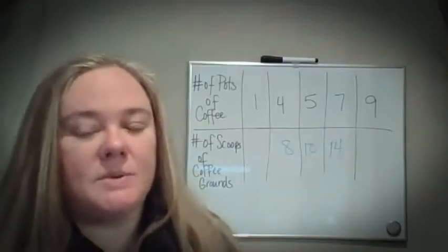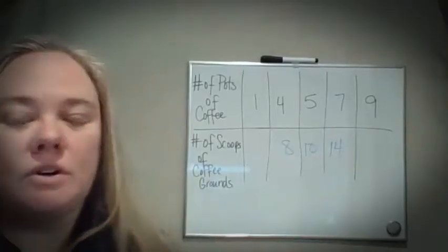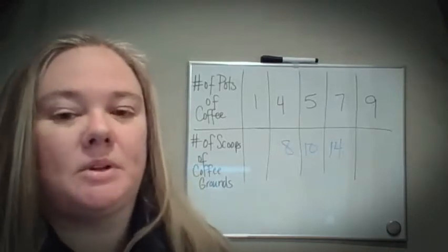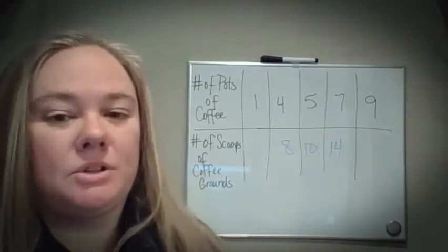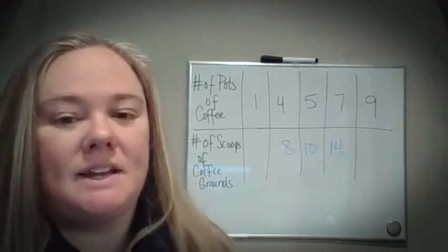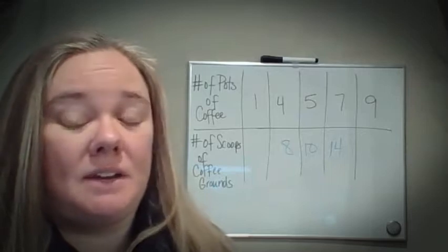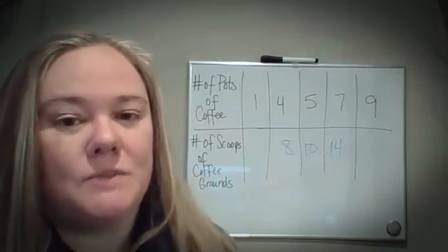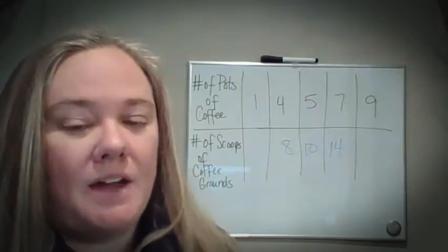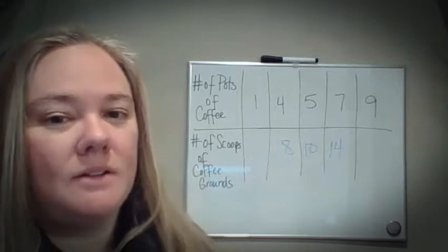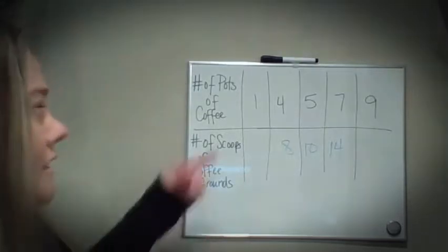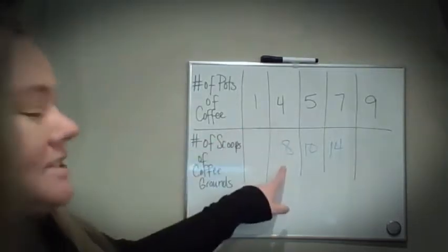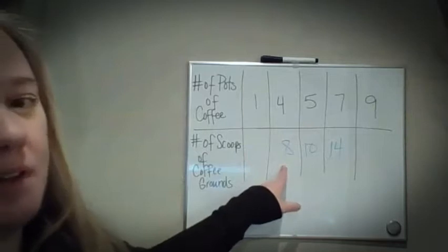Since we just went over finding a unit rate, this should be pretty simple. All we're looking at is the idea of finding ratios using a table. So I know that for four pots of coffee, I need eight scoops of coffee grounds.